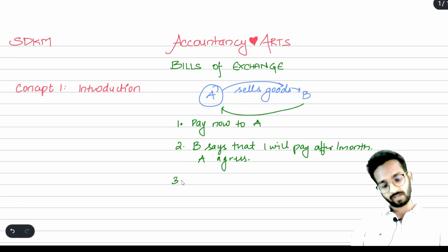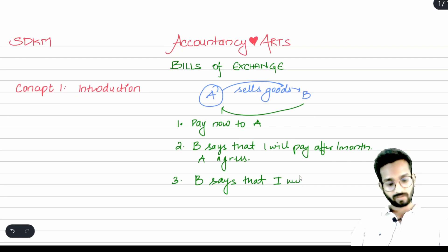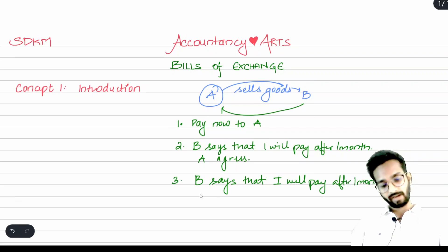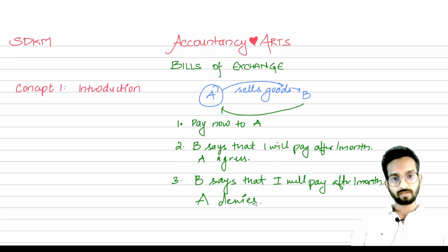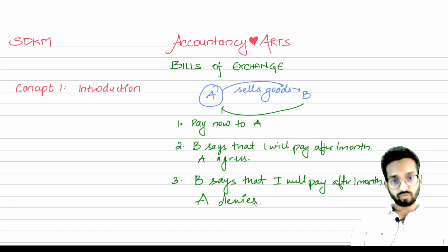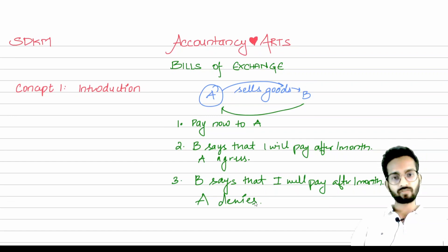The problem comes when B says 'I will pay after one month' but A denies and says 'No, I want the payment right now.' B replies that he does not have money, does not have cash at his office, does not have money in his bank account either. A insists: 'You have to make the payment right now, I don't want any drama.'